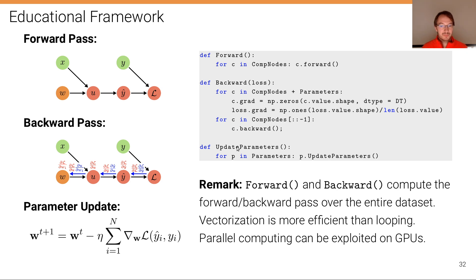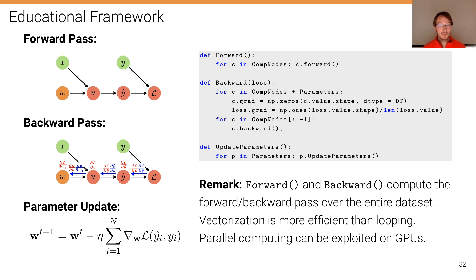Finally, we have an update parameters function that loops through the list of parameters and calls the update parameter function for each one. The forward and backward functions compute the forward and backward passes respectively over the entire dataset. The reason for this is that matrix operations are very efficient in Python, while iterating over the dataset with loops would be much slower. This vectorization is very important to exploit.